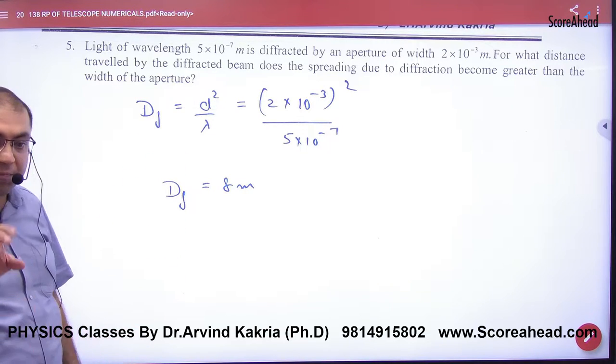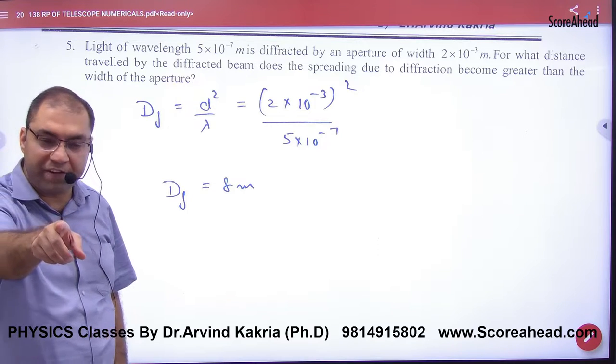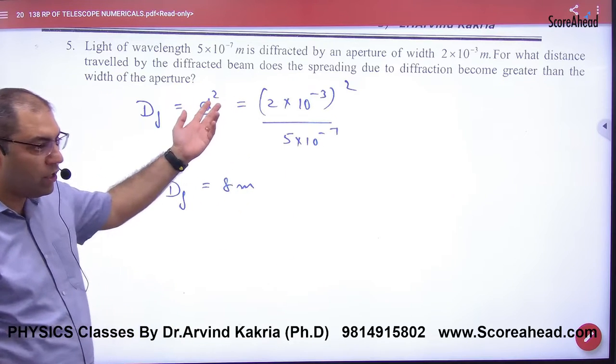Today we have done spreading x was equal to small d. Remember, today when the Fresnel distance was done, the small x was equal to small d. That is what we are saying. The small x equals small d.